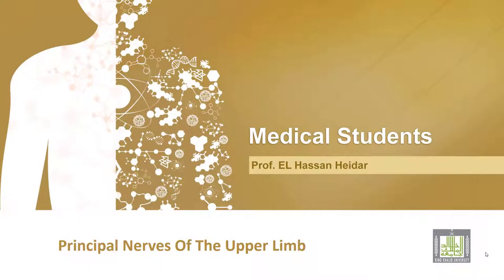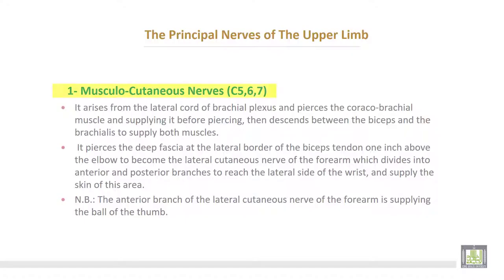Principal nerves of the upper limb. Starting with the musculocutaneous nerve, its root value is C5, 6, and 7. It arises from the lateral cord of the brachial plexus, pierces the coracobrachialis muscle and supplies it, then descends between the biceps and brachialis to supply both muscles.